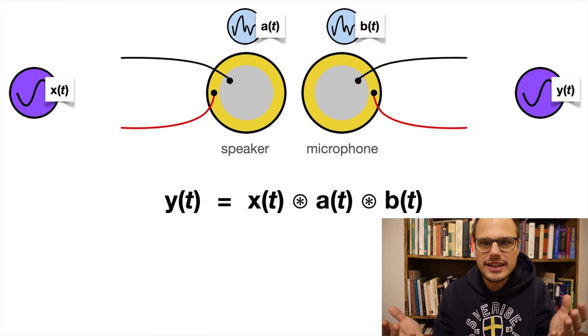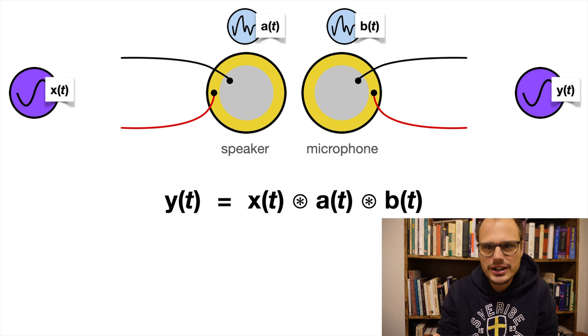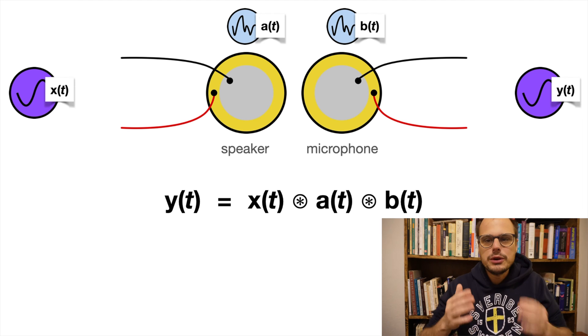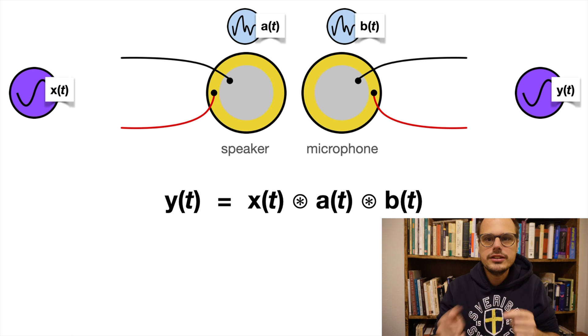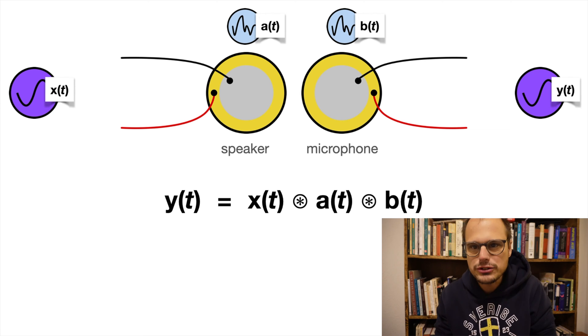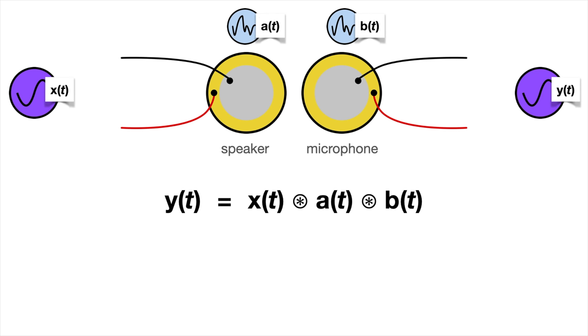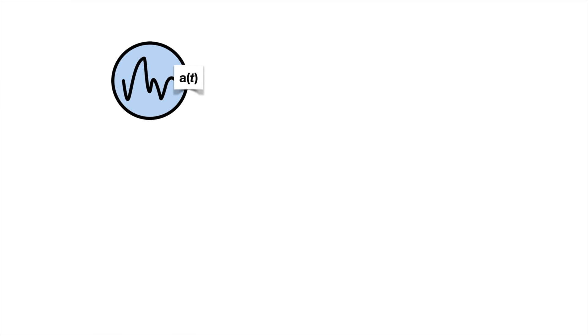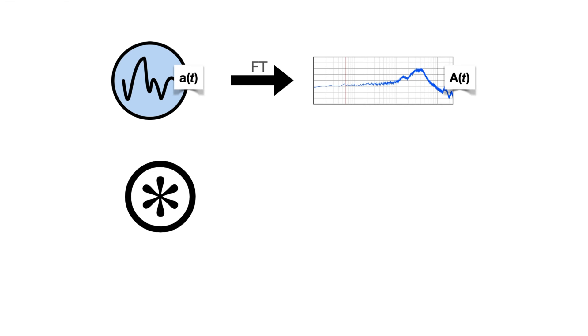And that's all fine and dandy if you're working in the time domain, but I'm actually not interested in the time varying impulse responses A and B. What I really want to know is the frequency response of the speaker and microphone. And so what I need to do is take the Fourier transform of each term in this equation. And the Fourier transform has two properties of interest right now. The first is that the Fourier transform transforms an impulse response into a frequency response. And so here I'm using the uppercase letter A to indicate that that's the Fourier transform of A. And that's now a function of frequency f, not time t. The other important property of the Fourier transform, in fact, probably the most important property of the Fourier transform is that it converts convolution into regular multiplication.